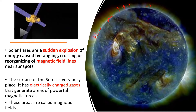Solar flares are not a regular phenomenon — they are a sudden process. Because of the magnetic fields present, a sudden explosion and flash occurs, generating lots of energy. This flash appears like a sphere emanating from the sun — that is what solar flares are.